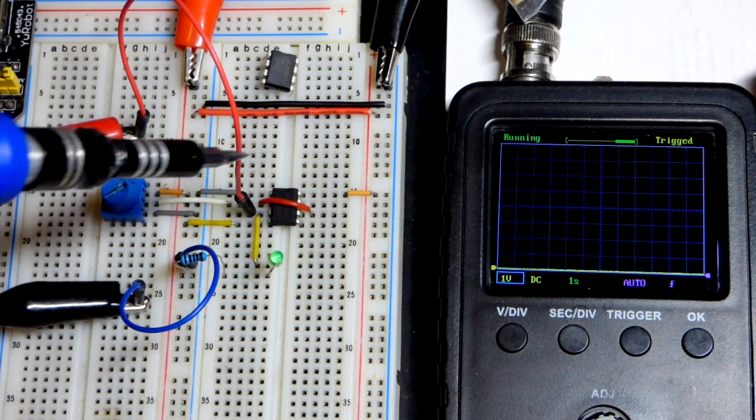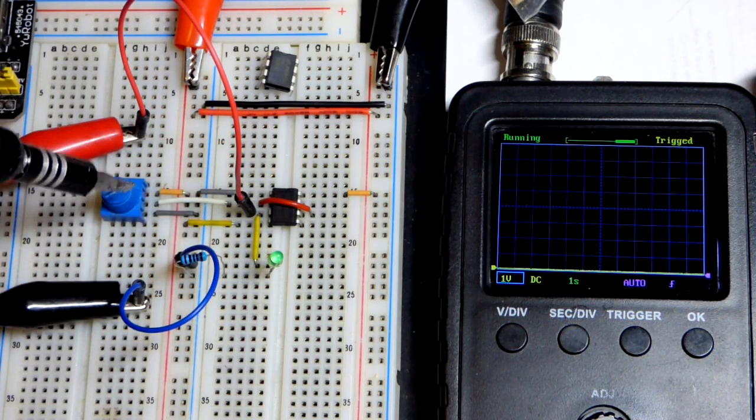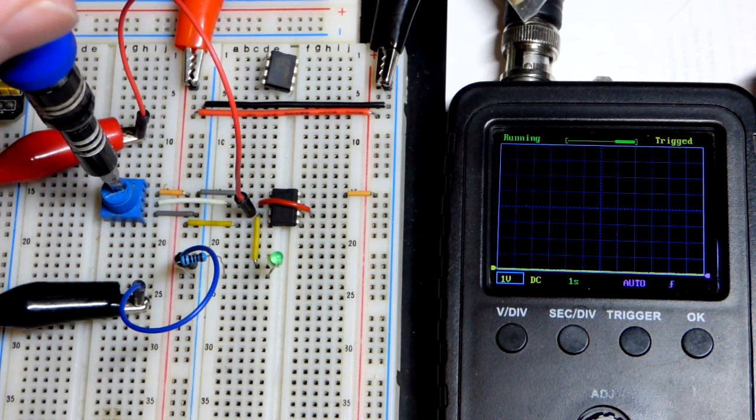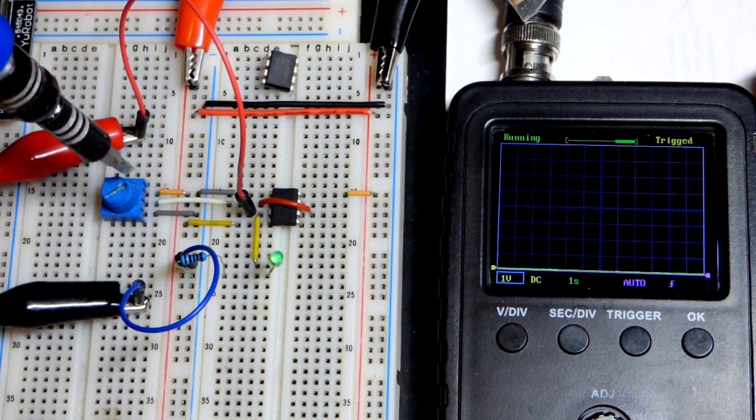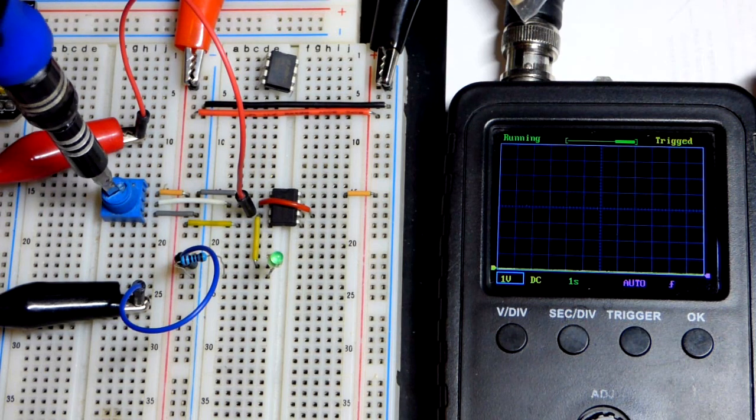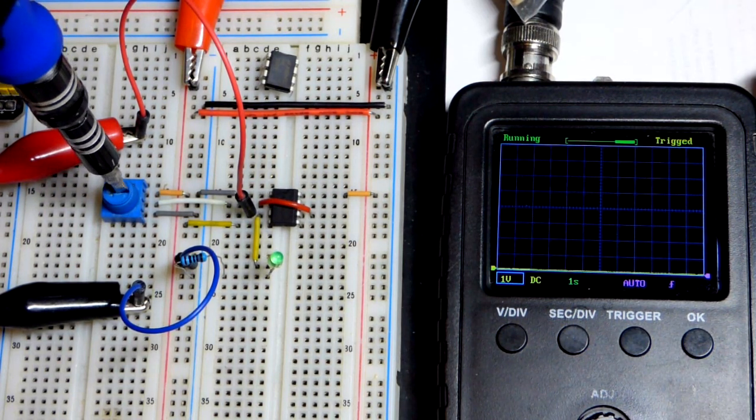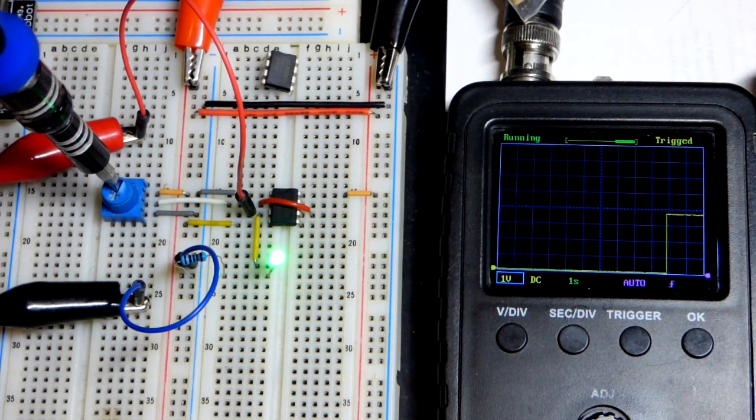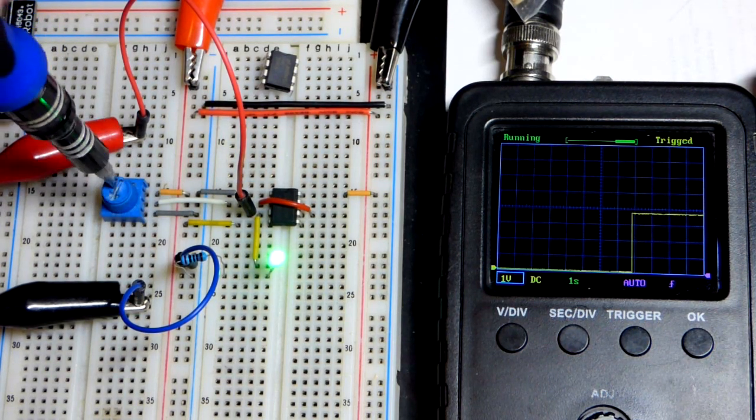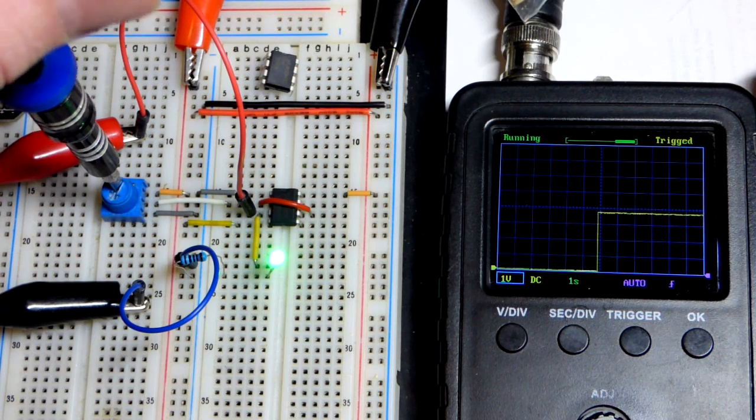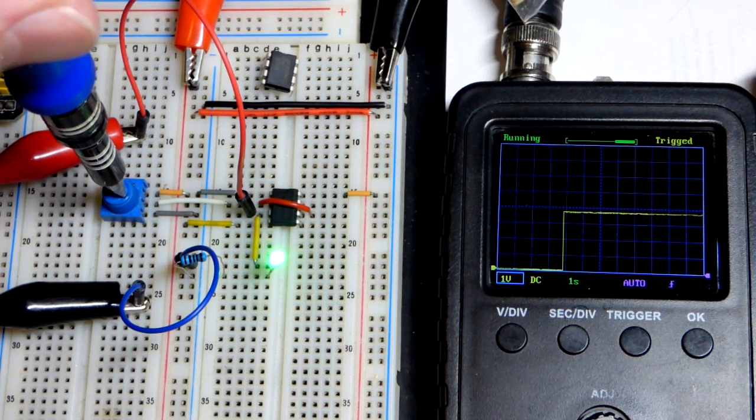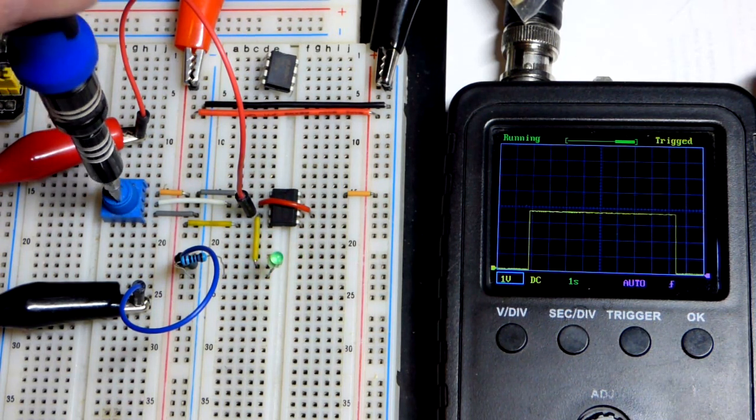We have it wired as a digital inverter right now. So when the input is high going to pin 2 and pin 6, the LED is off and the output is low. When I turn the trim pot low enough, the output goes high. So we drop below 1/3 supply voltage to trigger it; the other way we got to go above 2/3 supply voltage.